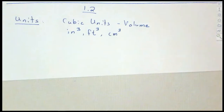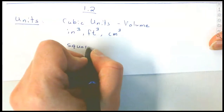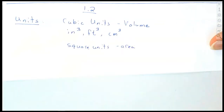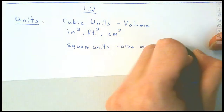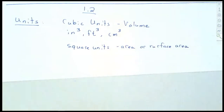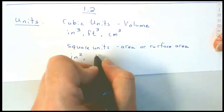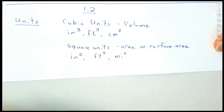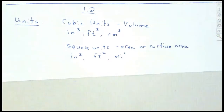When we talk about cubic units, it's normally going to be a volume. When we talk about square units, we're looking at area or surface area. Area or surface area is going to have square units — square inches, square feet, square miles, square kilometers. If we have an area or a surface area, it's going to have square units.